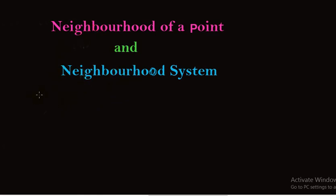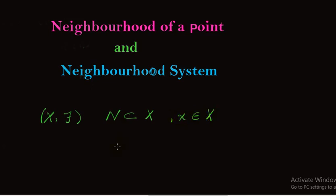Now, first we discuss neighborhood of a point. Suppose we have a topological space (X, τ) and N be a subset of X. Then N is said to be a neighborhood of a point x belonging to the ground set X, if there exists an open set O such that x belongs to O and O is a subset of N. Then N is called a neighborhood of the point x.